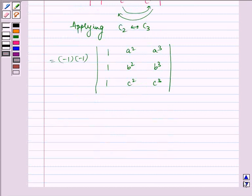Now which is equal to 1, A square, A cube, 1, B square, B cube, 1, C square, C cube.